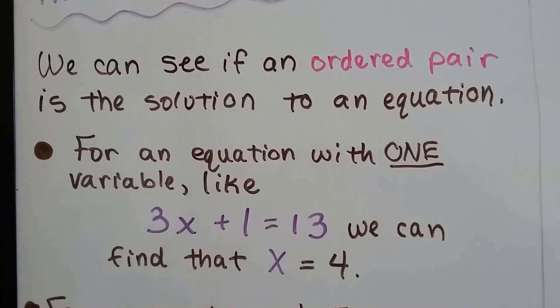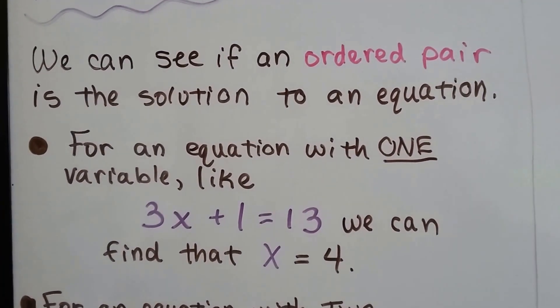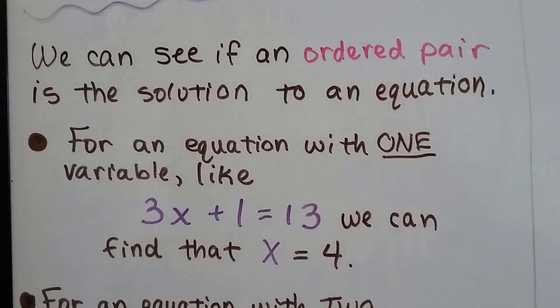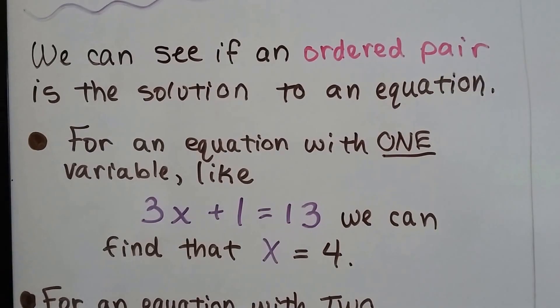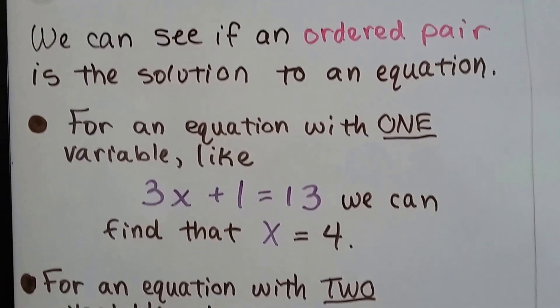For an equation with one variable like 3x plus 1 equals 13, we can find that x equals 4. 3 times 4 is 12, plus that 1 equals 13. That's kind of easy.